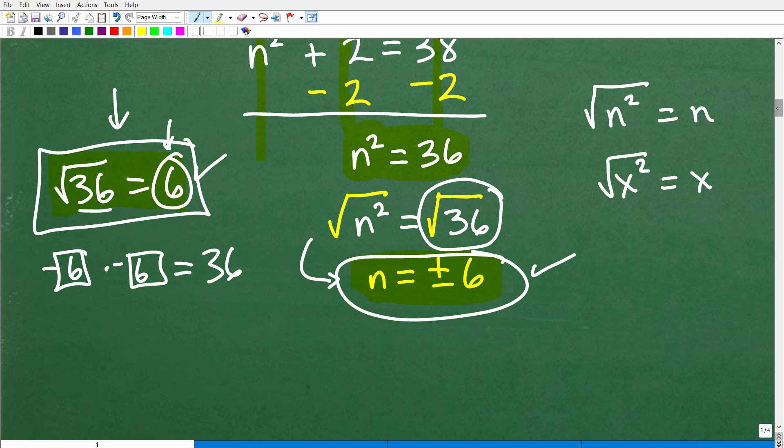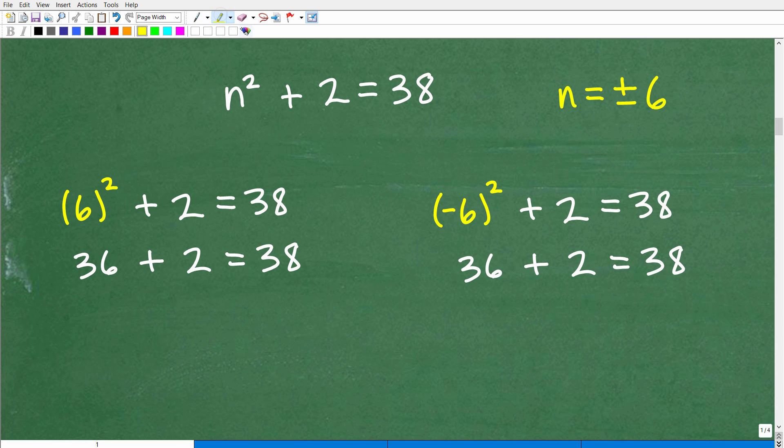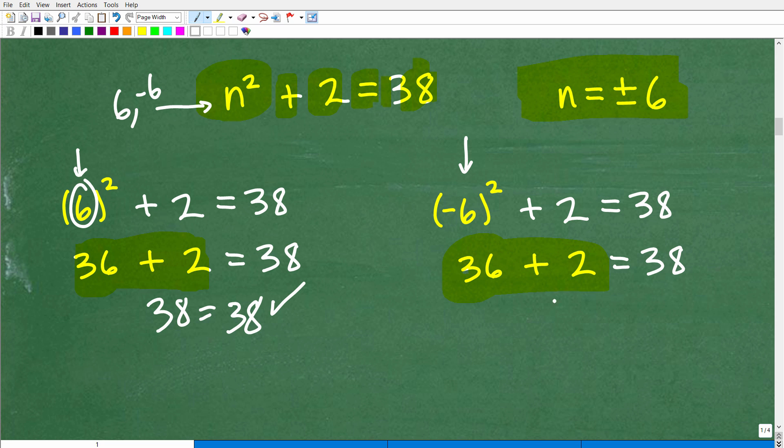Now let's check our answer to make sure we are good to go with our final solutions. Here is the equation: the square of a number plus 2 is 38. We're saying that number is n = ±6. Let's plug in 6 for n. That's going to be 6² + 2, which is 36 + 2 = 38. 38 = 38, that is a true statement. So this is a verified solution. Let's check negative 6 now. Negative 6 squared is negative 6 times negative 6, which is positive 36. So 36 + 2 = 38.